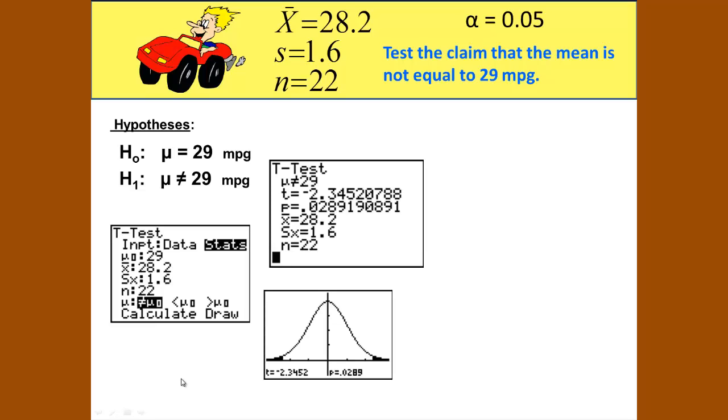That gives us our results, which tell us and show us that it is a two-tailed test. It gives us the t-value that we had before as well as the p-value. Our alpha is 0.05 and our p-value is 0.0289.